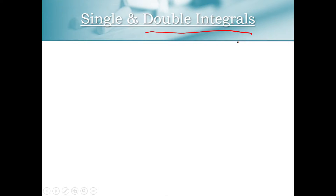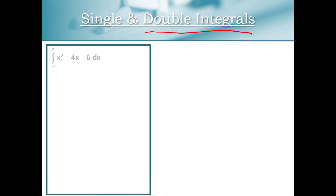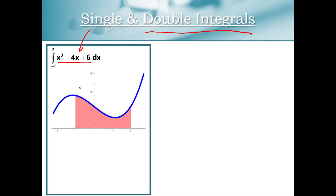Probably the best way to introduce double integrals is to begin with a single integral. So in this case, I have the integral from negative 1 to 2 of x cubed minus 4x plus 6 dx. We can think of our integrand as some curve in two-dimensional space, and our limits of integration, negative 1 to 2, is an interval over which we are integrating.